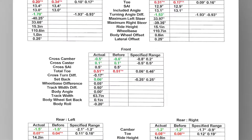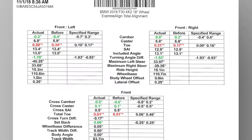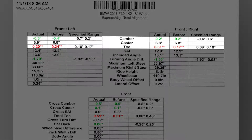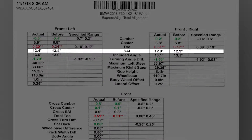Starting from the top, camber, caster, toe are, of course, tire angles. The steering axis inclination is measuring everything that holds the pivot points to the car — in other words, the strut tower, the unibody, the control arm, the subframe.